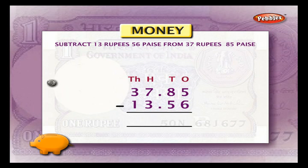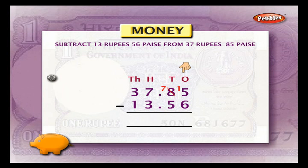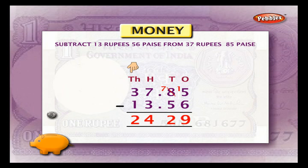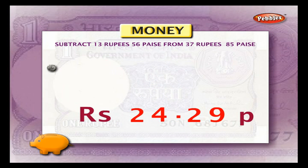Example 2: subtract 13 rupees 56 paisa from 37 rupees 85 paisa. Arrange the numbers in column and do subtraction. In the ones column, we cannot subtract 6 from 5, so borrow 1 from the tens column; now we have 15. 15 minus 6 is equal to 9. Subtract tens column: 7 minus 5 is equal to 2. Subtract hundreds column: 3 minus 3 is equal to... write 4. Subtract thousands column: 3 minus 1 is equal to 2. Place the dot in the answer. We get 24.29, that is 24 rupees and 29 paisa.